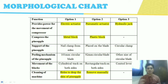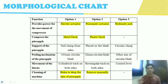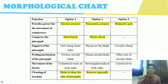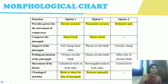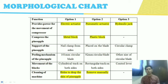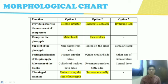This is our morphology chart. I will highlight three key points for the functions. For the first function, power for the movement of the compressor: option one is electric actuator, option two is pneumatic actuator, and option three is hydraulic. For the function to compress the pineapple: option one is metal block and option two is plastic block. For cleaning of the machine: option one is a hole to drop the pineapple skin, and option two is to remove the skin manually.